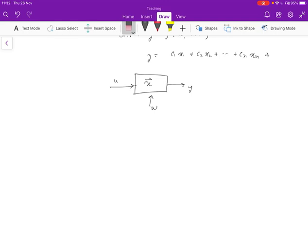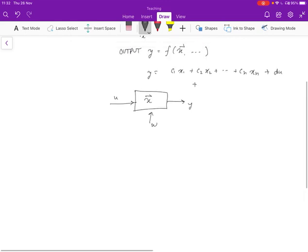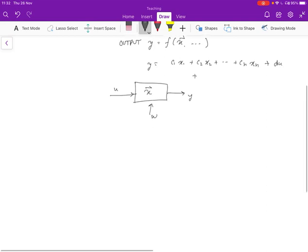So what we're going to have is this output Y plus D times U, so D is some constant times the input U, and plus the disturbances. So if you have X as a vector, then each of these values X can have its own disturbance. So we'll have E1 W1 plus E2 W2 plus En Wn.